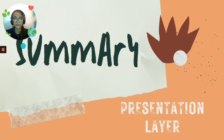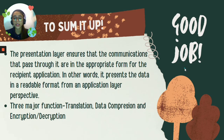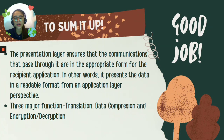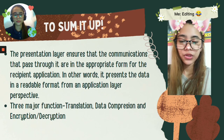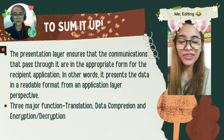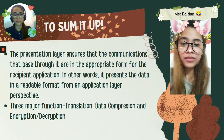For the summary of the presentation layer: the presentation layer ensures that communications passing through it are in the appropriate form for the recipient application. In other words, it presents data in a readable format from an application layer perspective. There are three major functions: translation, data compression, and encryption or decryption. After data is transferred from the application layer, the presentation layer translates, compresses, and encrypts the data before transmission.